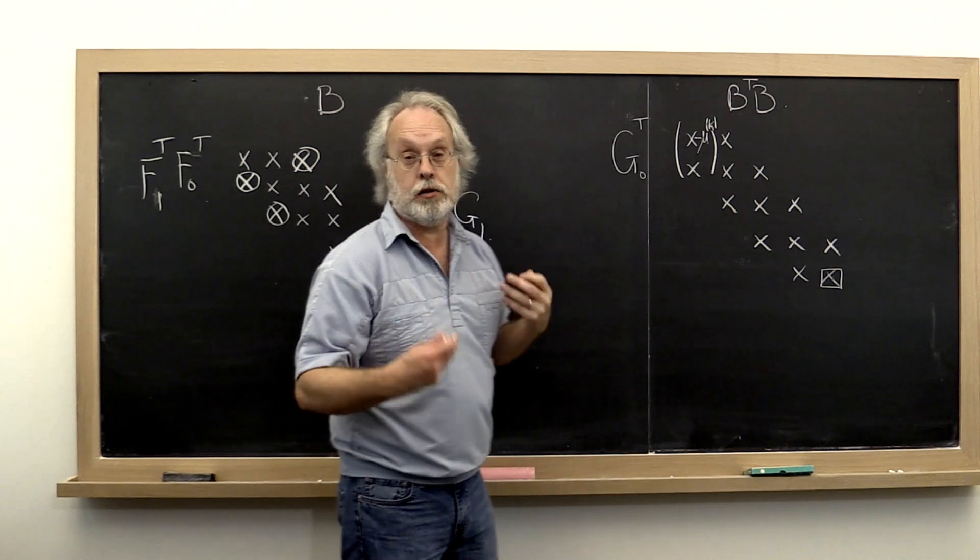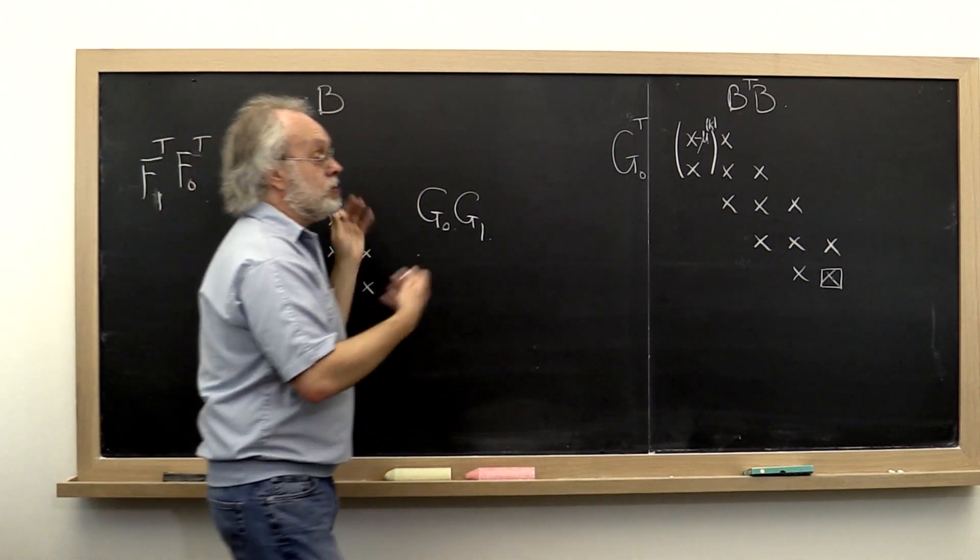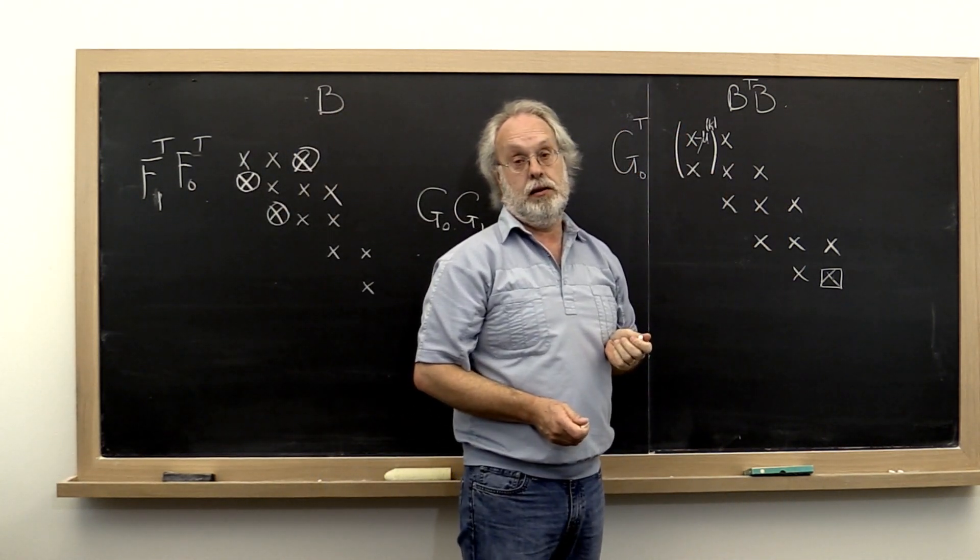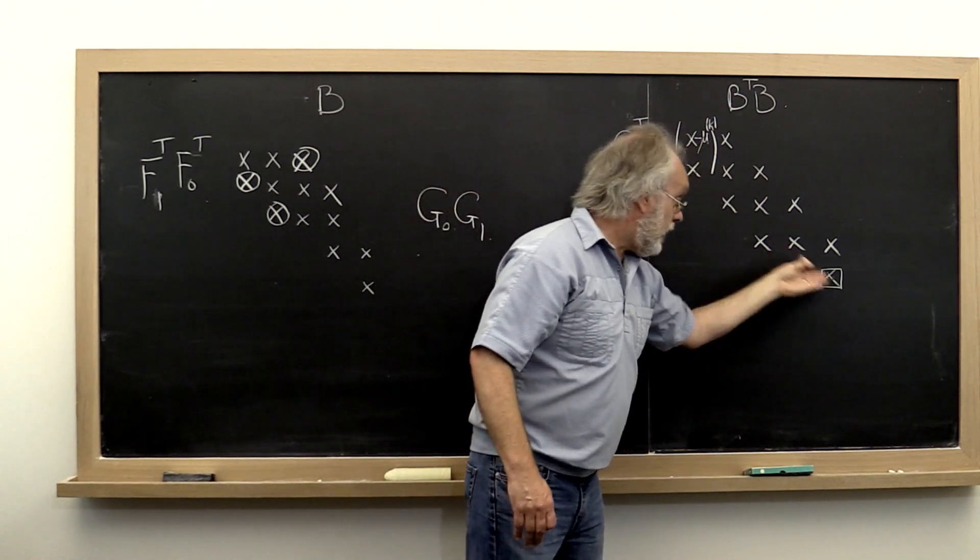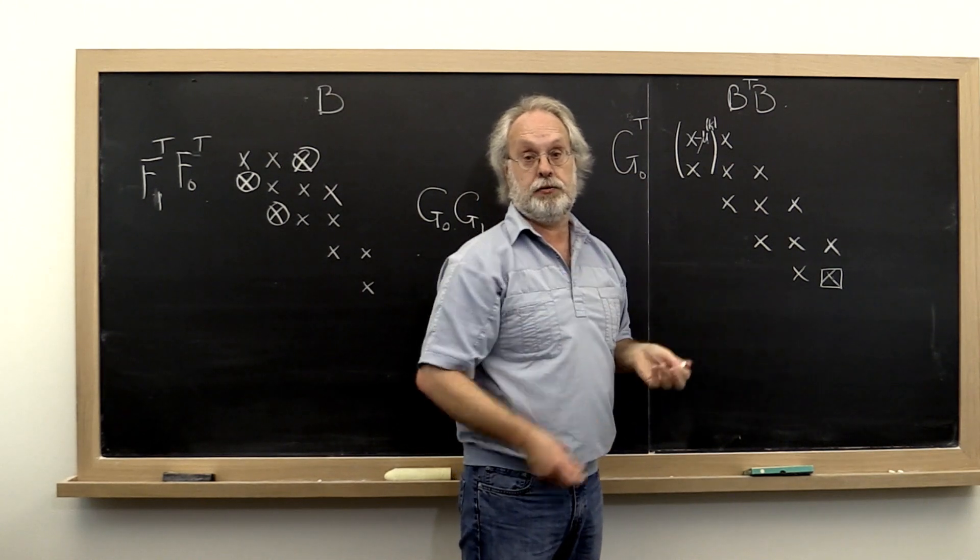Or rather, the bidiagonal matrix is exactly the bidiagonal matrix that would correspond to the tridiagonal matrix on this side. Now we know that this tridiagonal matrix, if we keep doing this iteration after iteration,